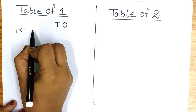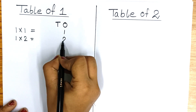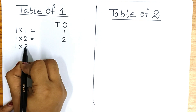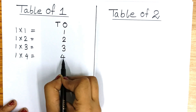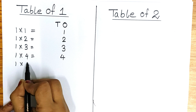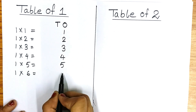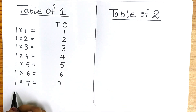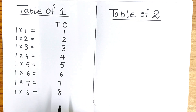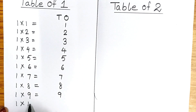One one is one. One two are two. One three are three. One four are four. One five are five. One six are six. One seven are seven. One eight are eight. One nine are nine. One ten are ten.